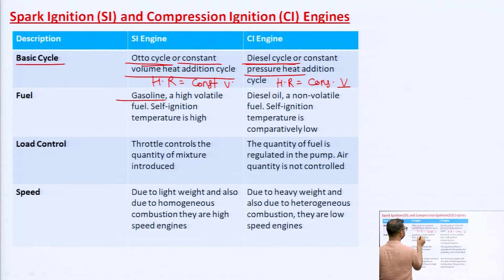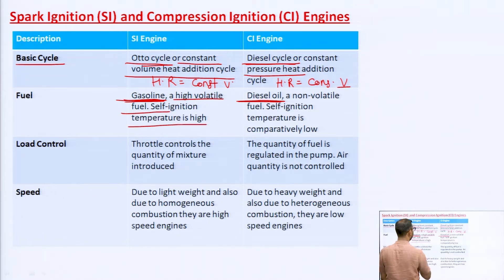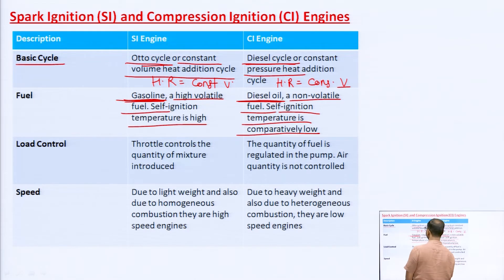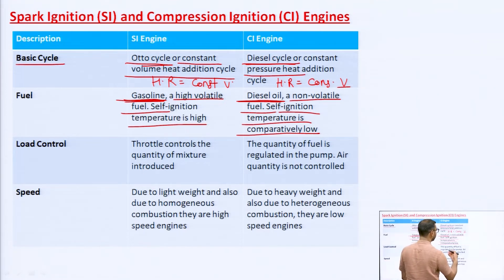In the SI engine, gasoline or petrol is used, whereas in the CI engine, diesel oil is used. Gasoline is a highly volatile fuel with a very high self-ignition temperature. Diesel oil is a non-volatile fuel with a comparatively low self-ignition temperature. Due to this, the SI engine has a lower compression ratio — between 6 to 10 — whereas the CI engine has a compression ratio varying from about 16 to 20 to 24.